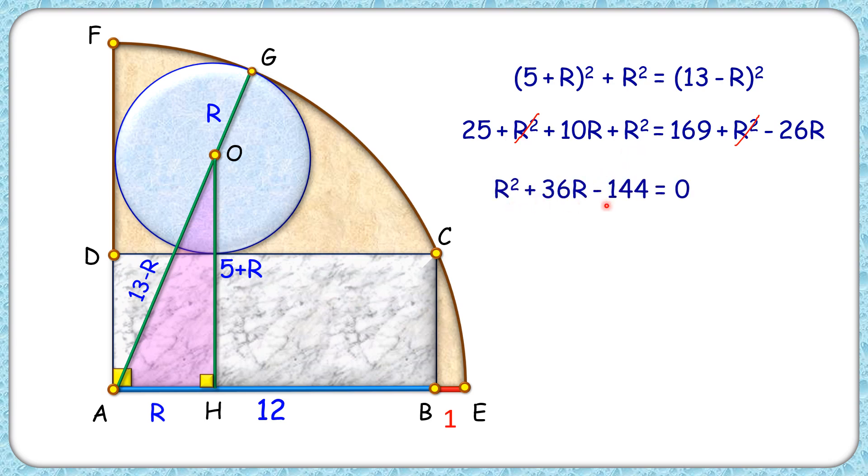Now this quadratic equation will be solved by quadratic formula to get the value of R as negative 18 plus minus 6 root 13. But as R cannot be negative, thus taking only the positive value here and solving it, we'll get the value of R as 3.63 cm, and that's our answer.